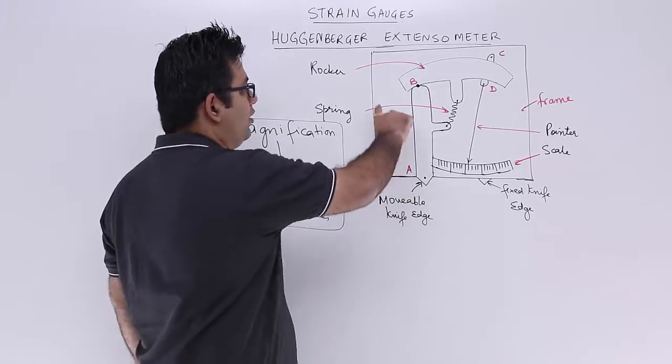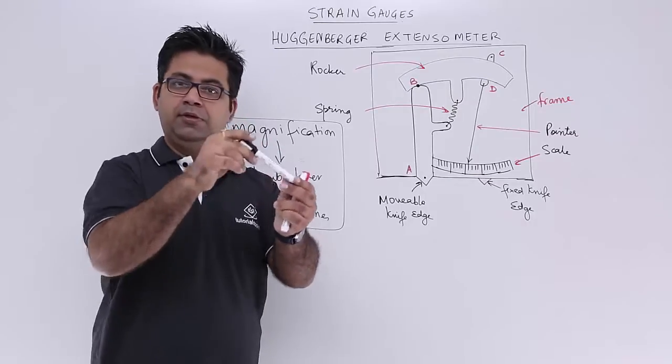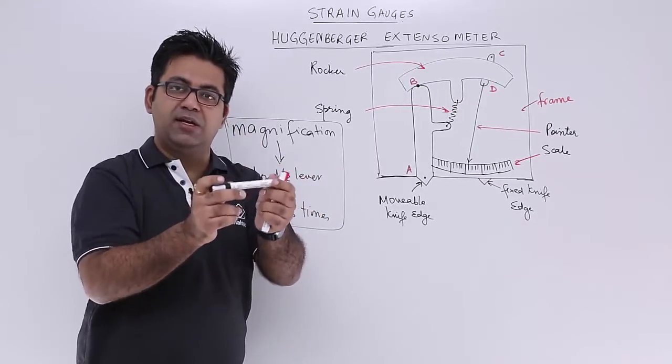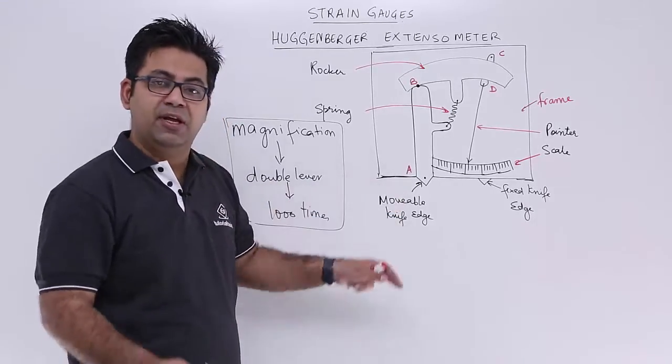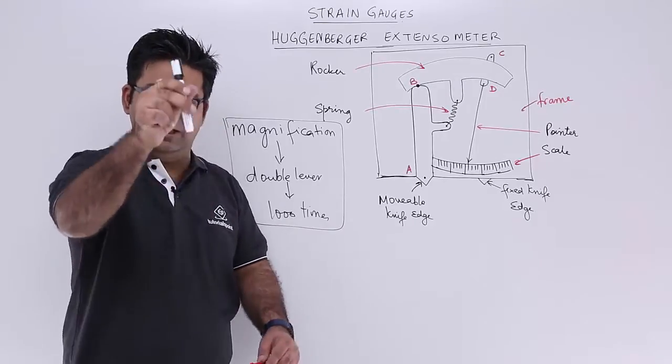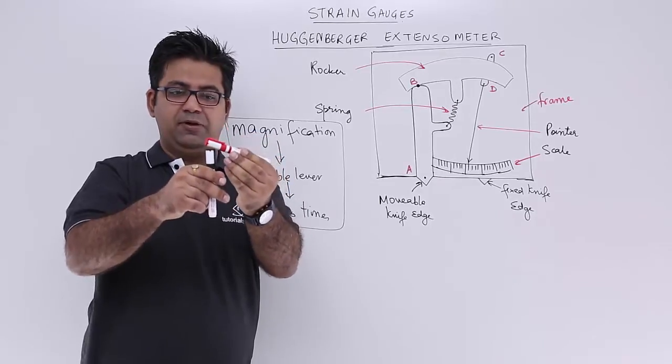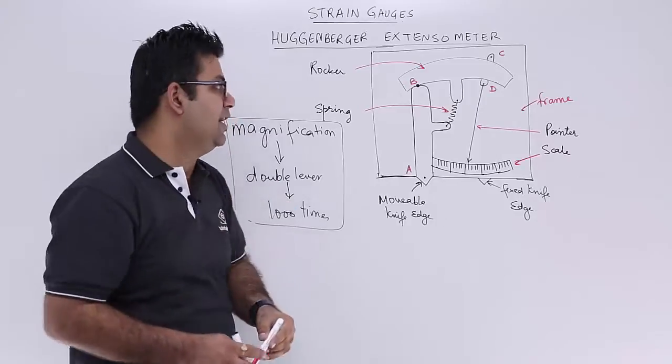Then we have a rocker. BD is a rocker which rocks like this. And this rocking motion or this rocker is basically transmitting the motion from this knife edge which can move vertically up and down. So when this moves up and down, this rocker will move like this. So when it moves up it moves down. So this is how the motion is happening.